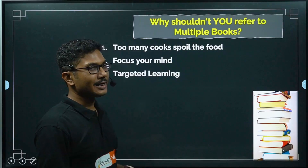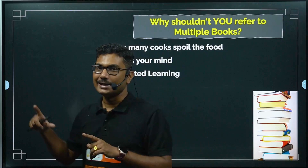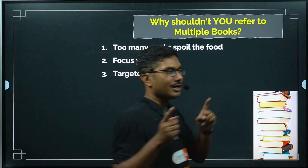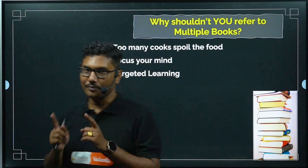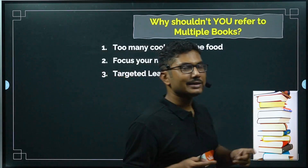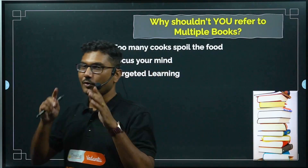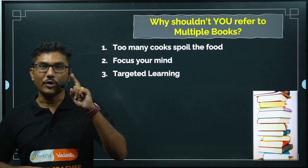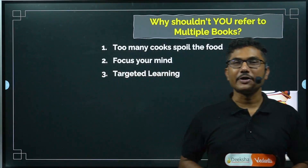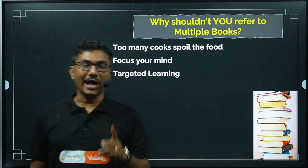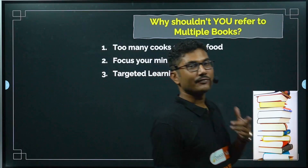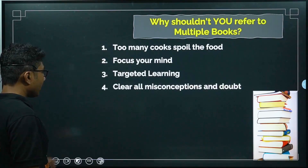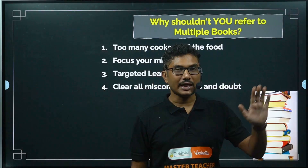Next is targeted learning. You have to have a study plan — for example, in this week I am going to complete the electricity and magnetism chapter, or I have to complete electrostatics in one week. You can watch our KCET 2025 strategy video where I have discussed a 16-week plan to complete the entire KCET 2025 syllabus.